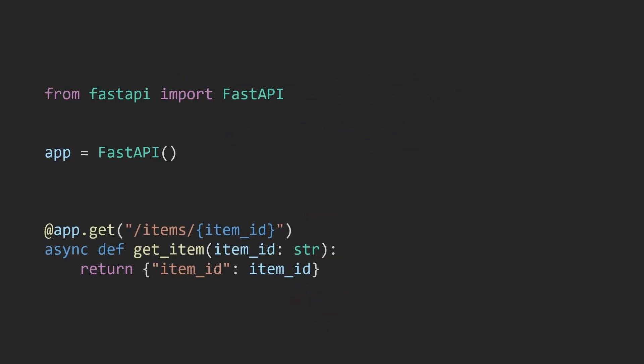In order to add validation to our path parameter, we will import the Path function from FastAPI. Then in our function we can set the path parameter item_id equal to the Path function. There is one required argument we need to pass in as a default value — the path parameter doesn't accept a default value, but they added this for compatibility reasons, so we just add an ellipsis indicating we are not setting a default value.